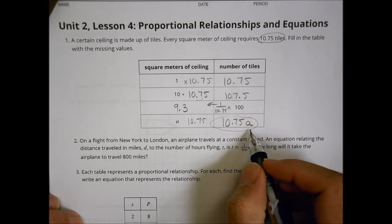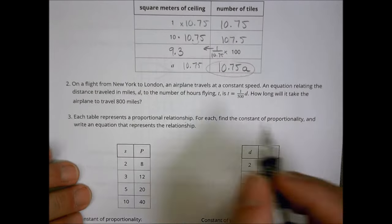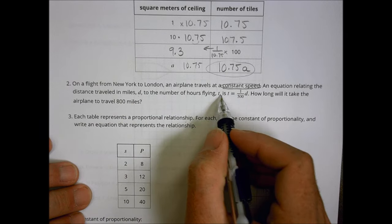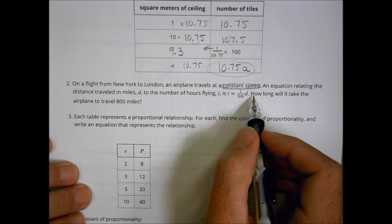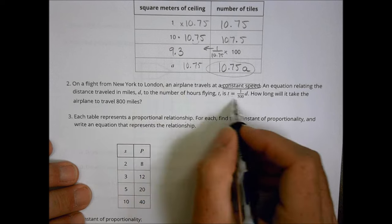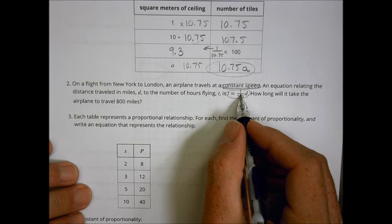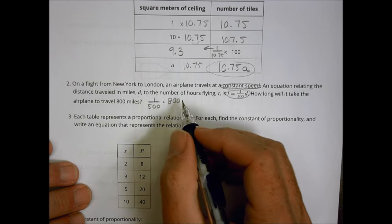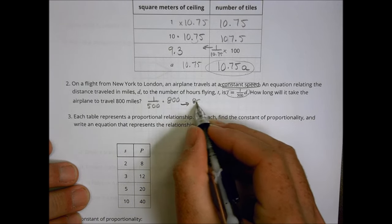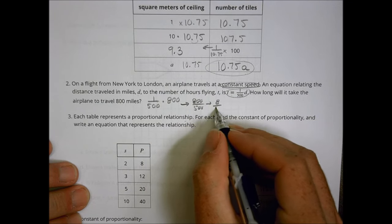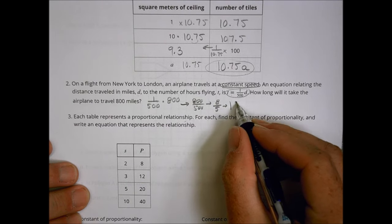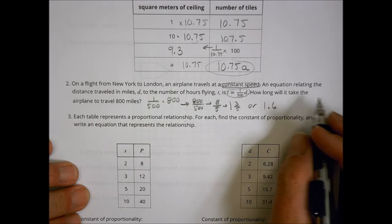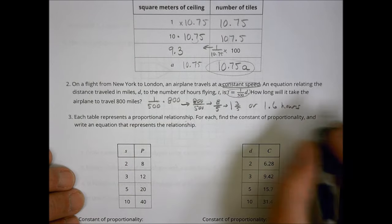Number two, on a flight from New York to London, an airplane travels at a constant speed. An equation relating the distance traveled in D, miles D, the number of hours flying T is T equals 1 over 500 D. How long will it take the airplane to travel 800 miles? So our rate in this case is 1 over 500 times our distance, which they said was 800 miles. So when I do the math, I have 800 over 500, which becomes 8 over 5, which can be reduced to one and three fifths, or as a decimal, I could write that as 1.6. So it'll take 1.6 hours to do the trip.